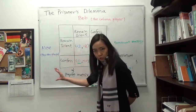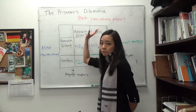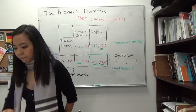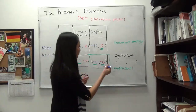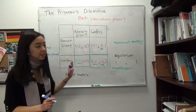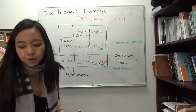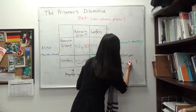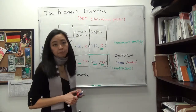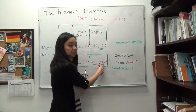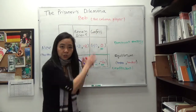Bob doesn't care what Alice chooses — Bob will always choose to confess, because confessing is always a better strategy for Bob. So now you know that they will both end up choosing confess. The equilibrium is confess, confess — meaning Alice will choose to confess and Bob will also choose to confess. The equilibrium is a pair of strategies, meaning their choices. The equilibrium is not negative 6, negative 6, because negative 6 is a payoff given the strategies of the two players.